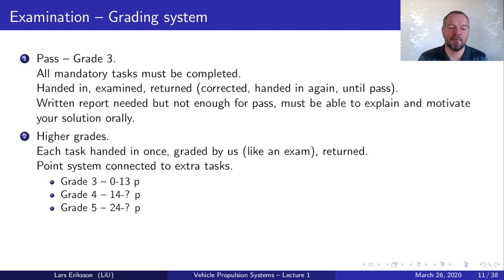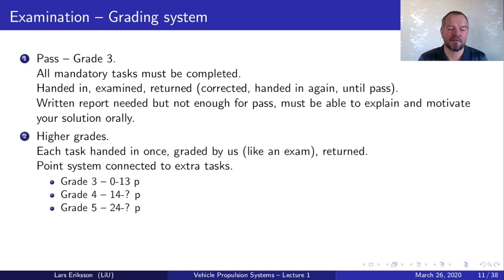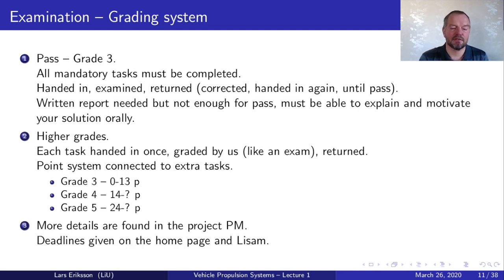The compendium shows how many points you get for each extra task. You work with them and hand them in like a regular exam — they are graded with no possibility to add complementary things after submission. You don't need to hand in all of them at once; you can make a sequence of tasks first, see how many points you get, then hand in a second sequence and decide whether to aim for grade 4 or grade 5. More details are in the project compendium and deadlines are given on the homepage and on LISAM.